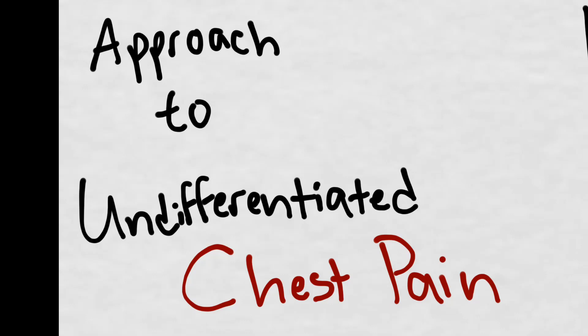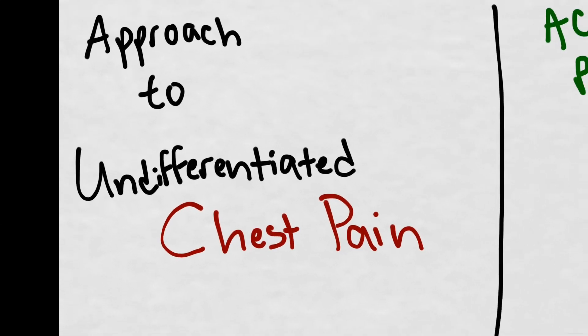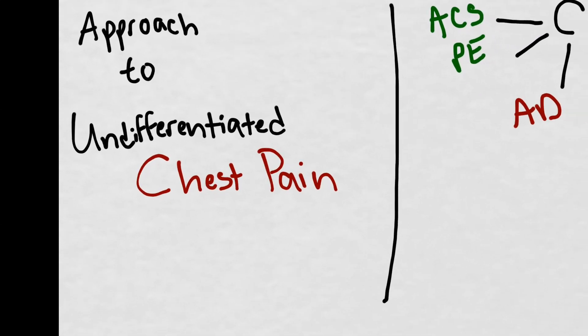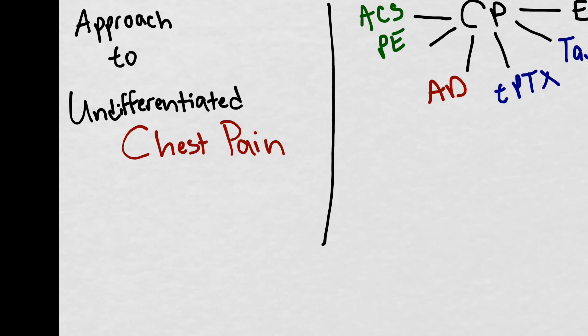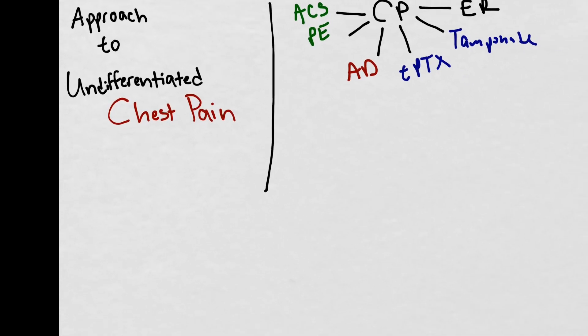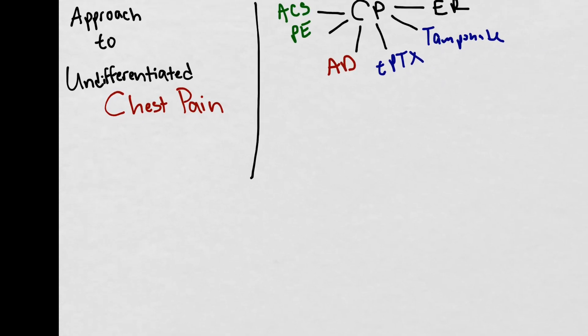This lecture is on the approach to undifferentiated chest pain. As with other chief complaints, the first step is figuring out what the chief complaint is and then building a critical differential from that chief complaint.